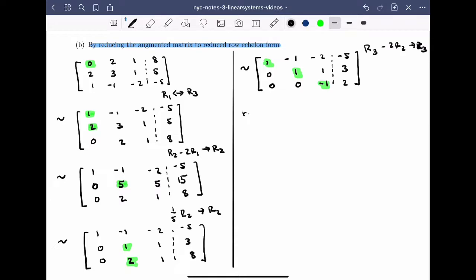At this point, I'll start with row 3. And I'll check what it tells me. Row 3 says that minus x3 is equal to 2, which tells me that x3 is equal to minus 2.